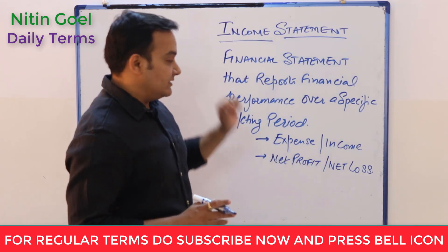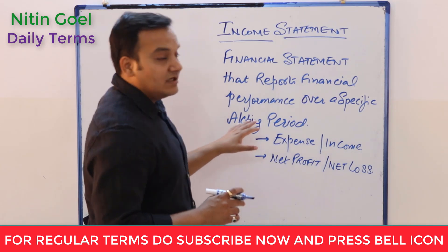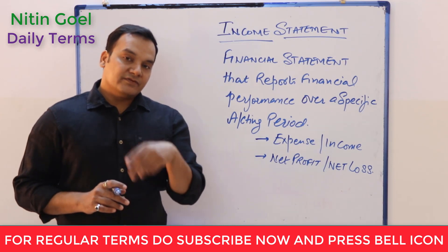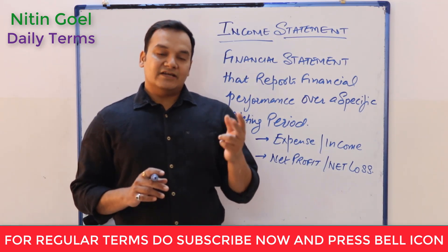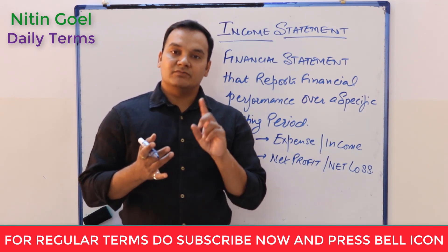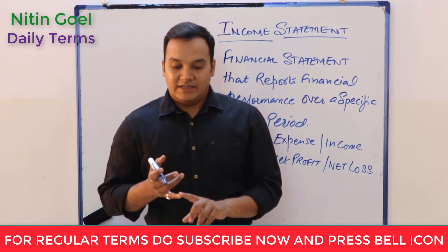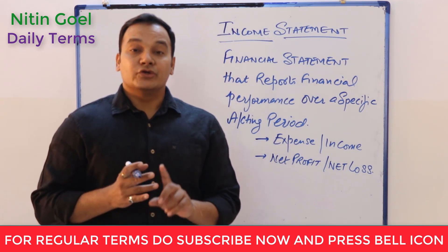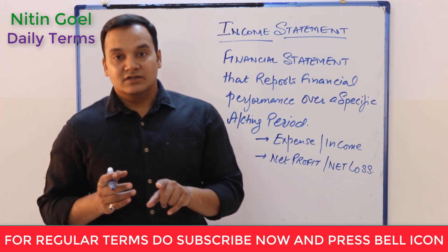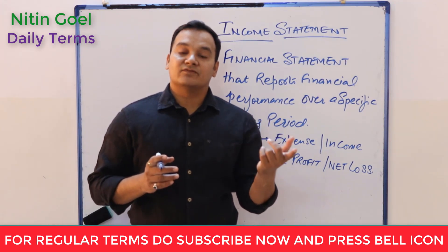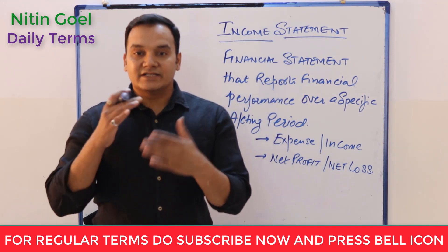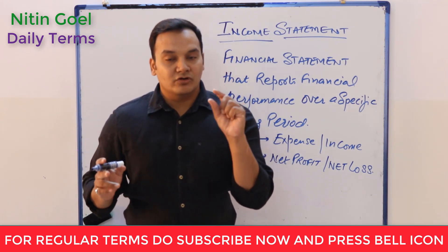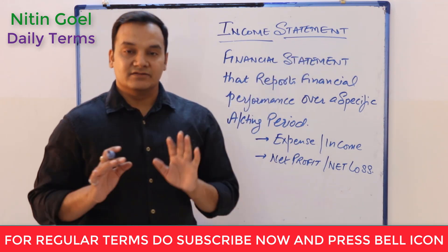The income statement covers a specific accounting period. Different countries may have different accounting periods. In India, it runs from 1st April to 31st March. In Middle East countries, it starts from 1st January to 31st December. In the UK, it starts from 1st April to 31st March, but for personal financials it may start from 1st September till 31st August. So the accounting period can vary from country to country.